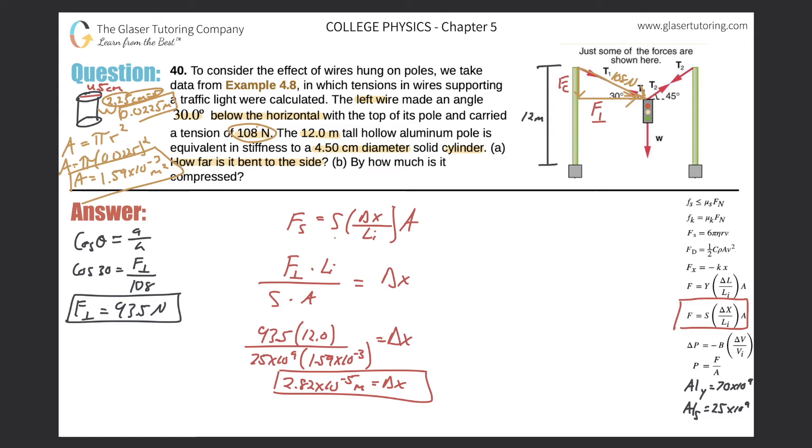Let's take a look at B. It says, by how much is it compressed? Basically same problem, just different formula. We're going to use Young's formula now, where it says the force of tension or compression is equal to Young's modulus multiplied by the change in length divided by the initial length of the object multiplied by the cross-sectional area. So let's solve it for delta L. We basically get F times L I all over Y times A is equal to delta L. And what we now need to do is figure out the force of compression.